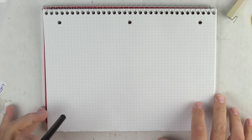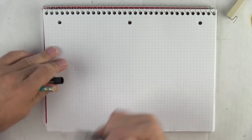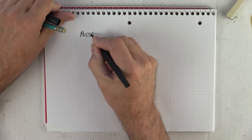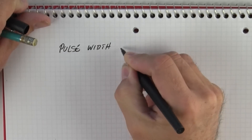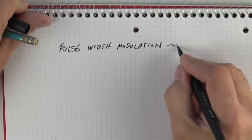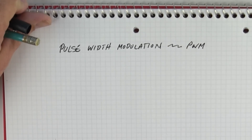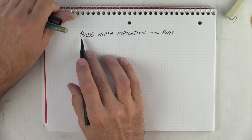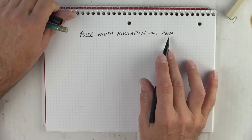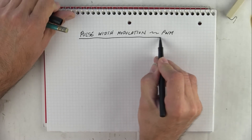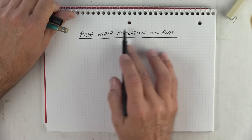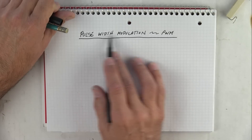Today I'm going to discuss pulse width modulation, otherwise known as PWM. PWM seems complicated but it's not. One of the things I encourage you to do is pay attention to language — don't look at 'pulse width modulation' as a phrase and be intimidated by it.